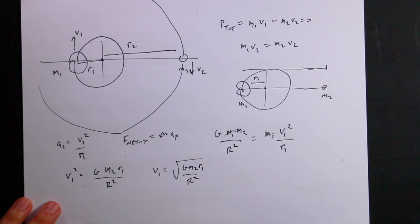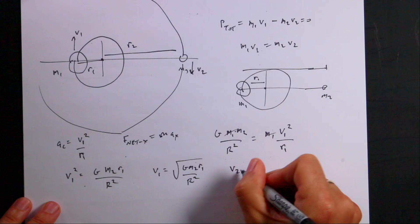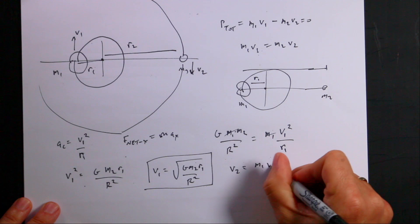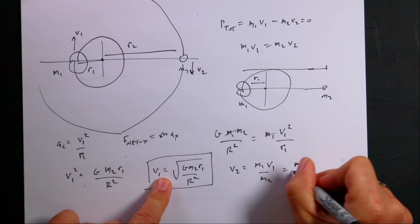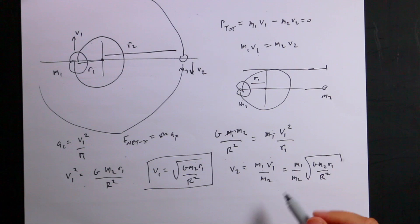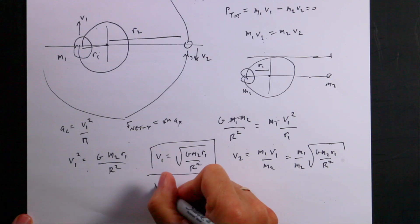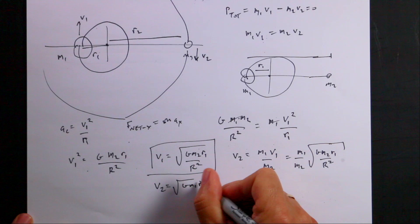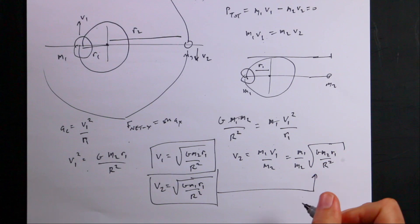For V2, I can use the momentum relation: V2 equals M1·V1 over M2, which gives M1 over M2 times the square root of G·M2·R1 over R squared. Doing the calculation the other way directly gives V2 equals the square root of G·M1·R2 over R squared. I think those are the same values, but I'm not 100% sure — I'll do it in Python and we'll know for sure.